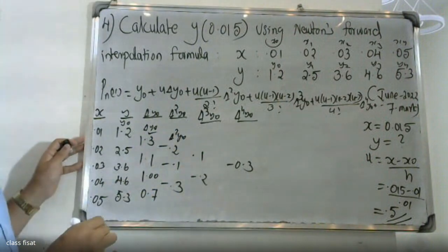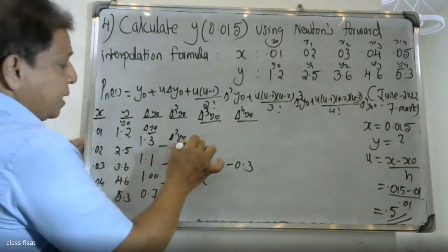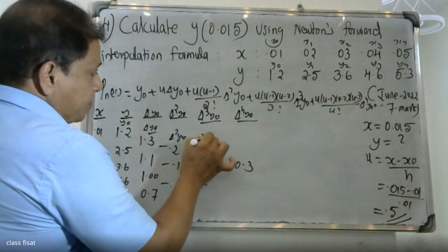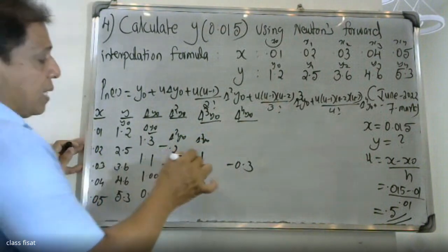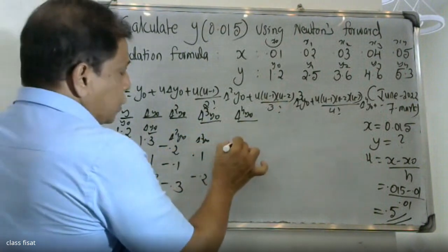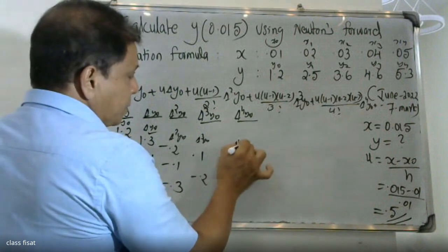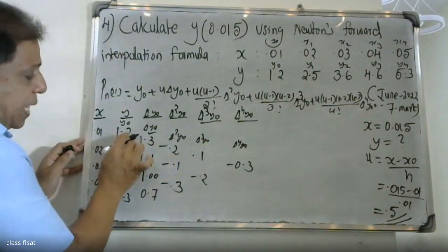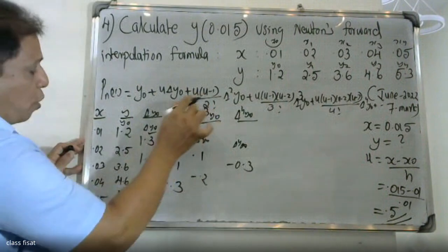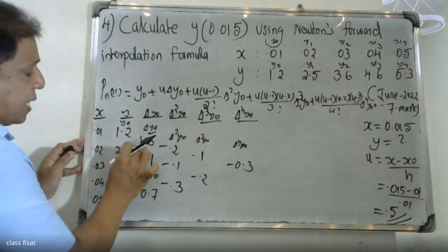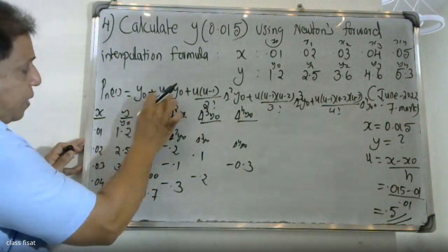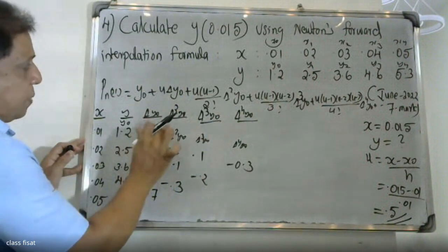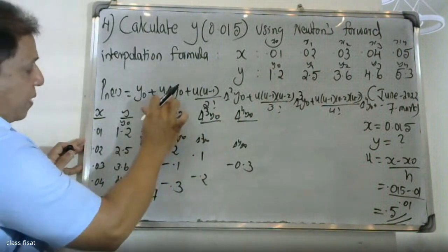From the difference table: Δ²y0 = −0.2, Δ³y0 = 0.1 (third difference), Δ⁴y0 (fourth difference from upper layer). The y0 value is 1.2, Δy0 = 1.3, Δ²y0 = −0.2.